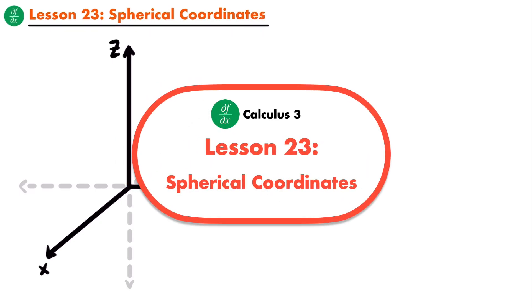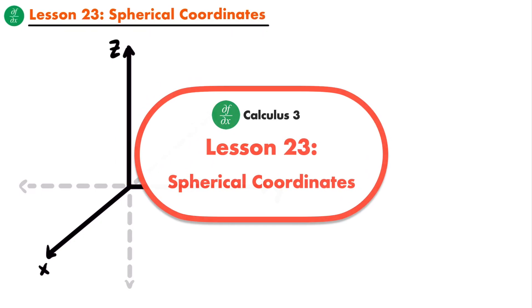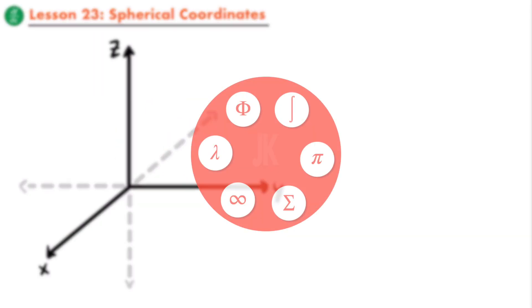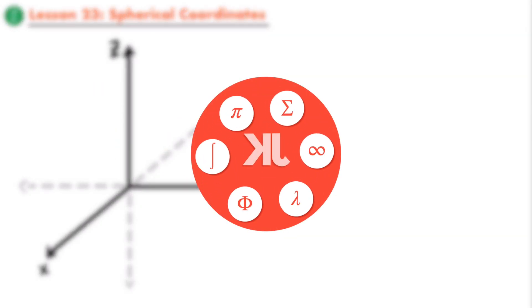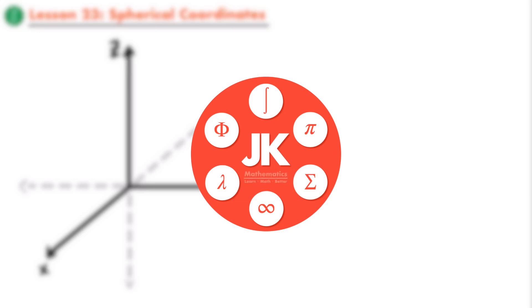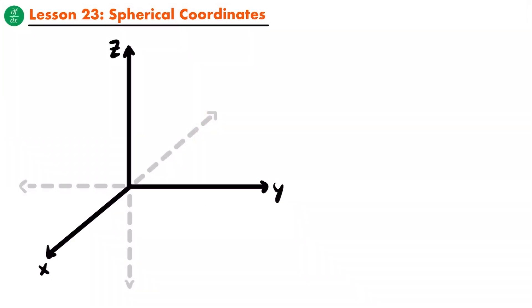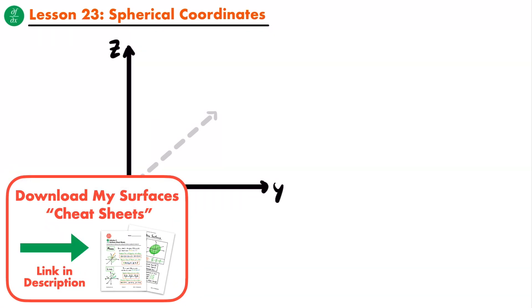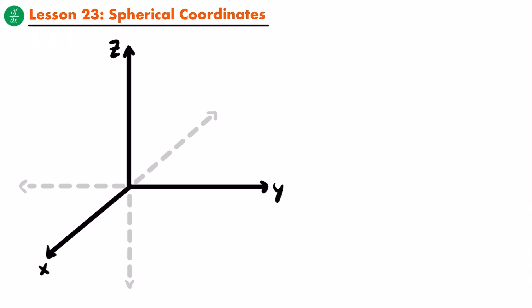Welcome back. Let's learn about spherical coordinates. In the last lesson, we looked at the first of two alternative 3D coordinate systems, and that system was the cylindrical coordinate system, which is essentially just polar coordinates but with a Z coordinate.